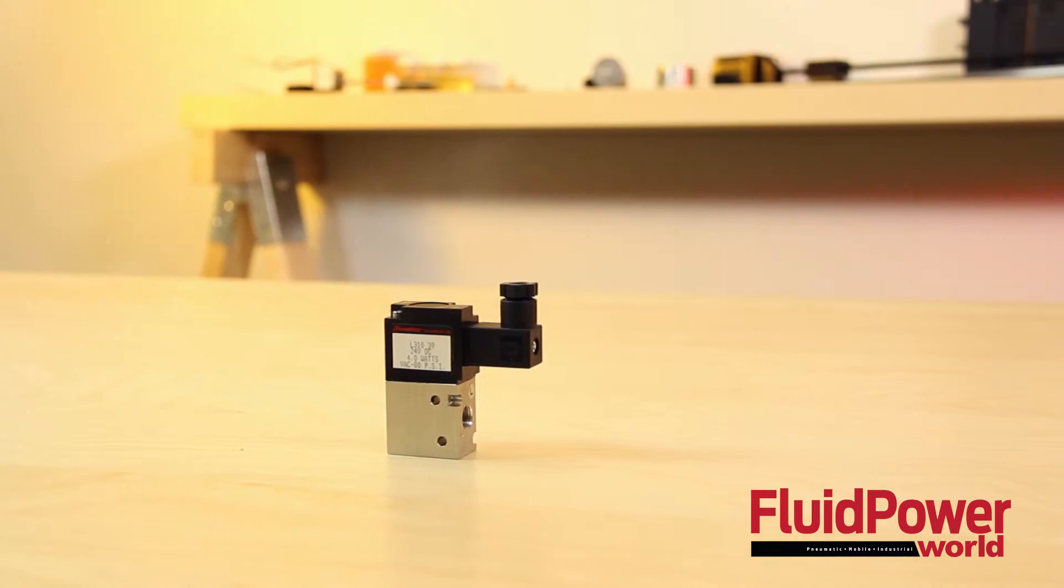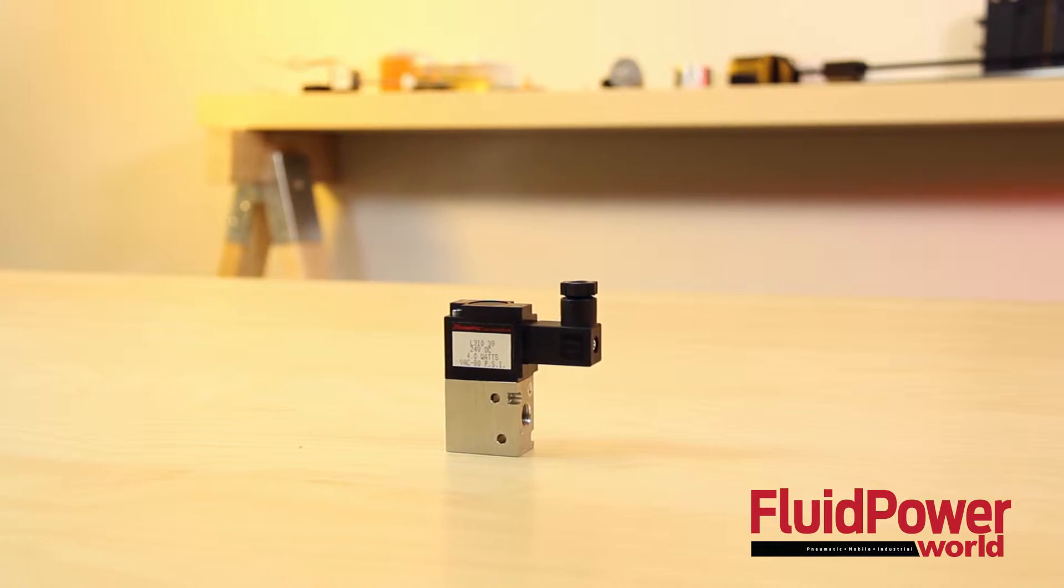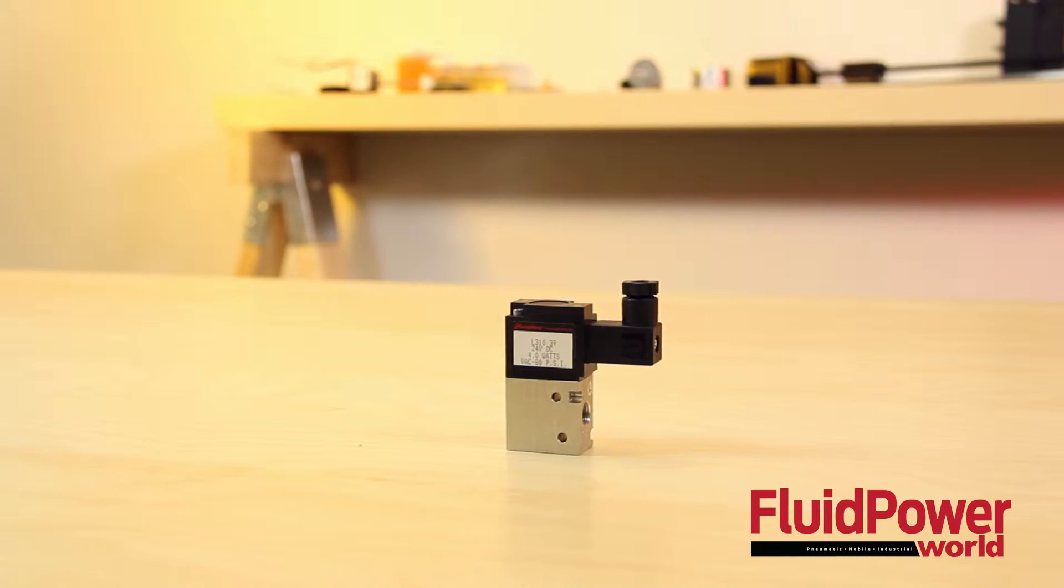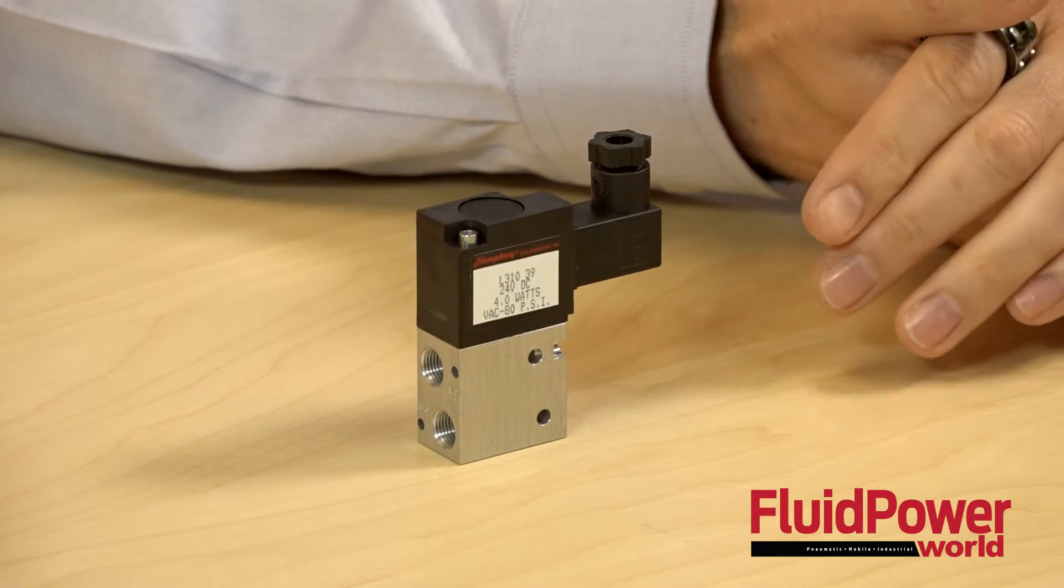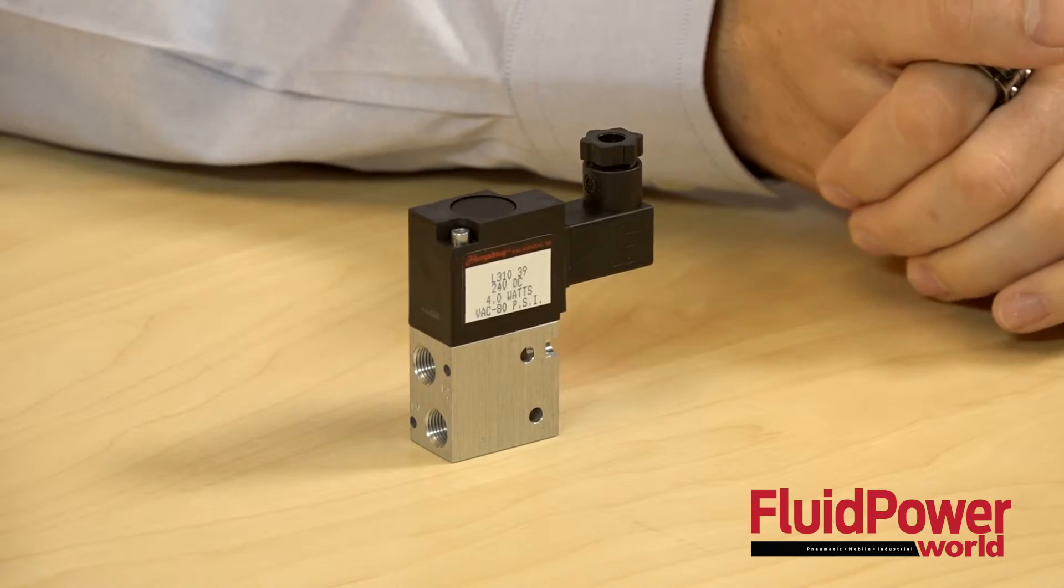Standard single solenoid valves require electrical power while holding the valve in the energized position. But here, a 50 millisecond pulse of the solenoid fully shifts the L310 from one position to the other. Power is removed and the latching function holds the solenoid in valve position and that offers significant energy savings.